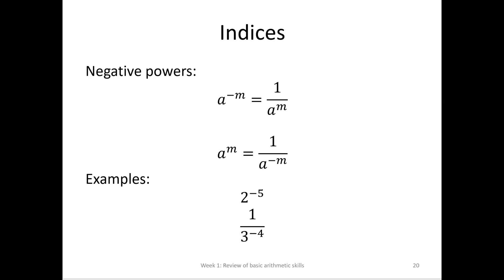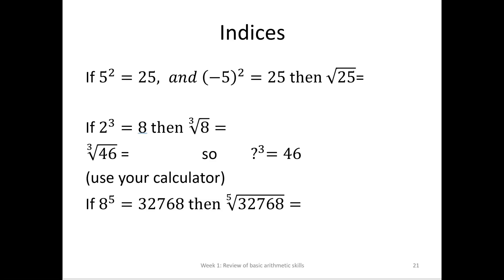We can have negative powers — we'll do more of this in Topic 2 — but some numerical examples: 3 to the negative 2 means 1 over 3 squared. 3 squared is 1 over 3 to the negative 2. 2 to the negative 5 is 1 over 2 to the 5. And 1 over 3 to the negative 4 is equal to 3 to the 4. We also have roots: if 5 times 5 is 25, and negative 5 times negative 5 is 25, then the square root of 25 is either 5 or negative 5.